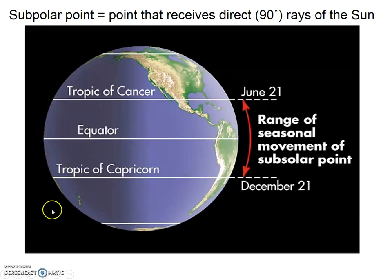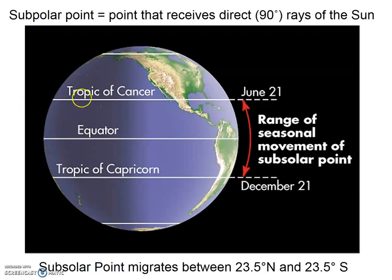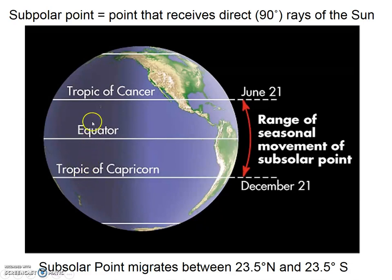Regions on Earth outside of the tropics never get the direct rays of the Sun. Let's follow the path of the sub-solar point one more time: June 21st it's at the Tropic of Cancer, then it moves through July, August, September, October, November, December, January, February, March, April, May, and June — back and forth. The Tropic of Cancer and the Tropic of Capricorn are why we have these special parallels — they mark the northernmost and southernmost limit of the direct rays of the Sun.